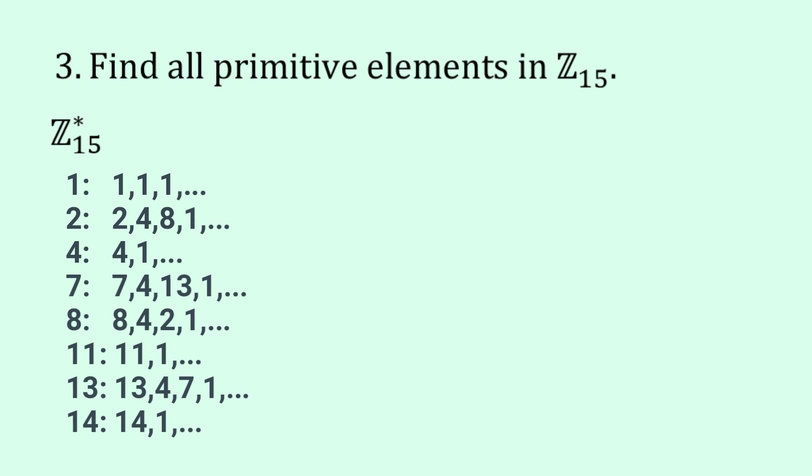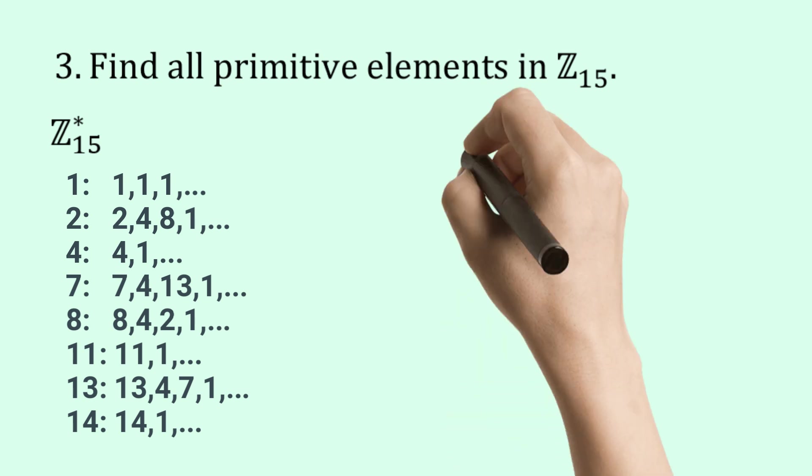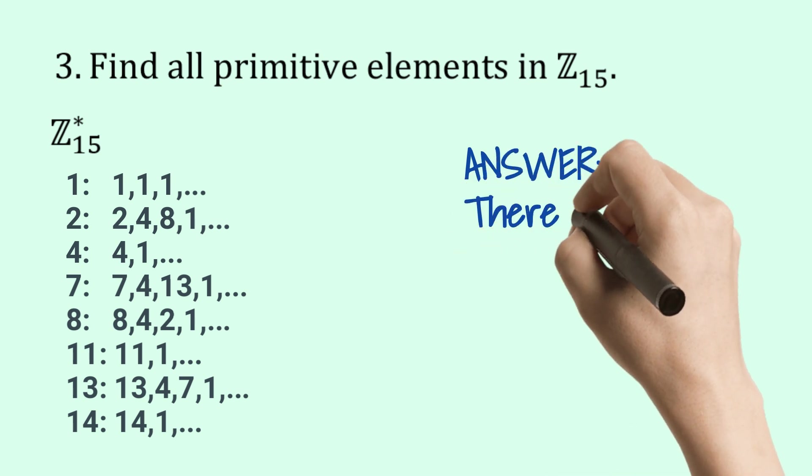Now in this case, you can see that there's no element here that generates through its powers all the elements of Z 15. So there is no primitive here, which is fine. You don't have to have a primitive. So the answer is there is no primitive element.